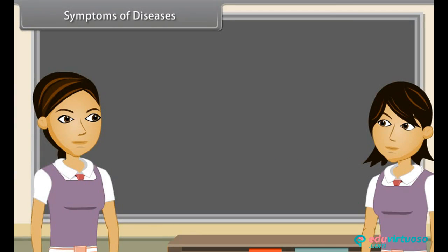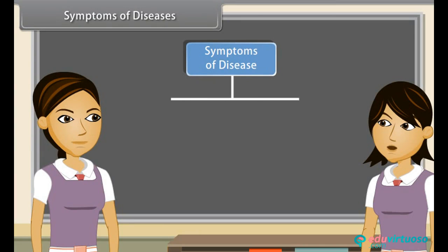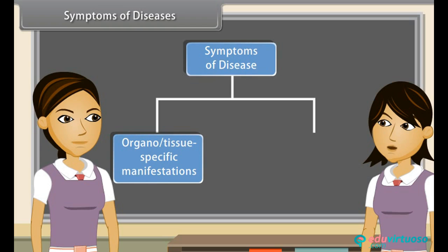Symptoms of diseases. Ankita, I want to tell you that disease symptoms are of two types: organ or tissue specific manifestations and common manifestations.